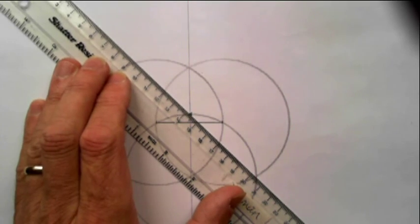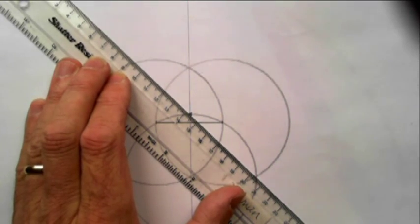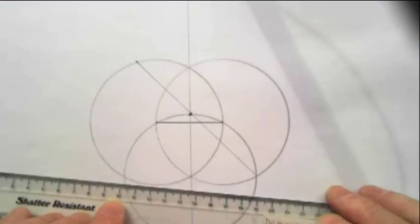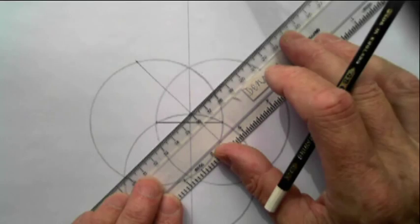Where the circles cross through that point to the outside, and the same on the other side.